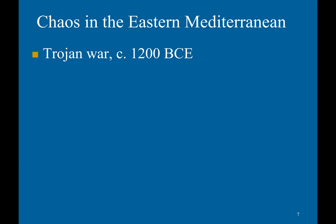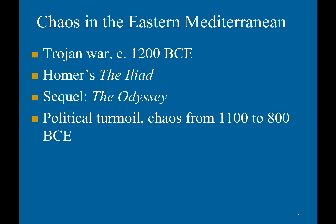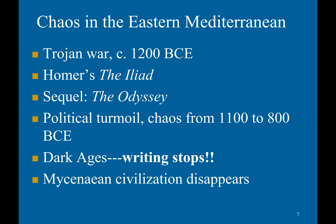The Trojan War occurred around 1200 BCE and becomes the focus of Homer's The Iliad and The Odyssey. Political turmoil and chaos continued from 1100 to 800 BCE with the Dark Ages. This is when writing suddenly stops, and we get a very long empty blank in the historical record. The Mycenaean civilization simply disappears.